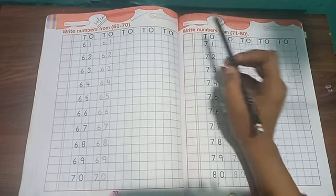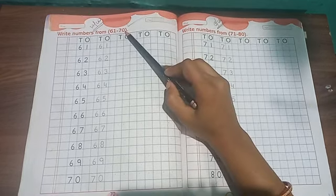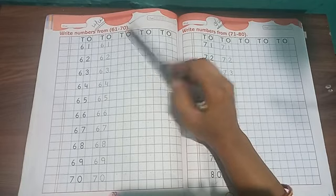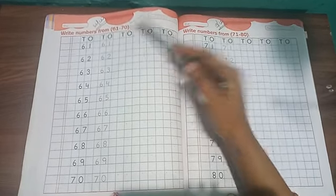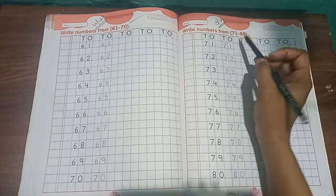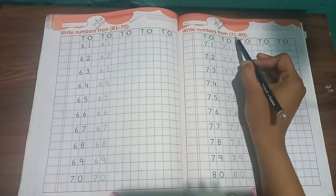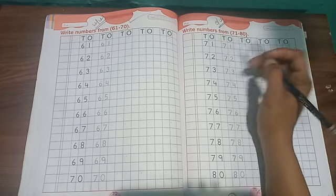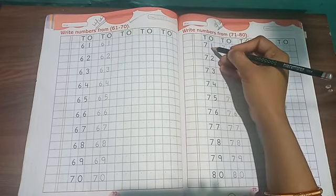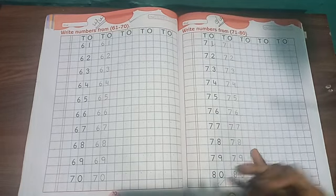Before, we have learned numbers from 61 to 70. We have practiced how to write 61 to 70. Now today we will practice from 71 to 80 numbers. So see here, written from number 71 to 80, these are dots you have to trace.